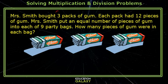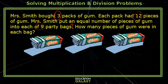Mrs. Smith bought three packs of gum. Each pack contained 12 pieces of gum, and she put an equal number of pieces of gum into nine party bags. We're trying to figure out how many pieces of gum were in each bag.